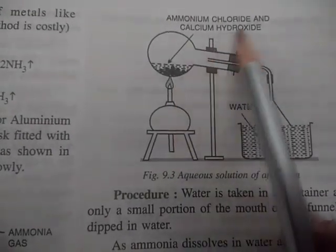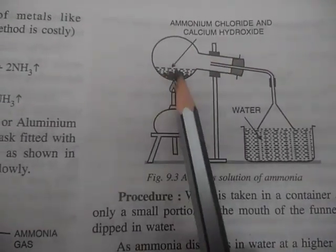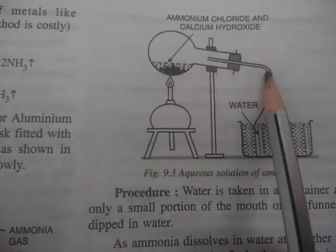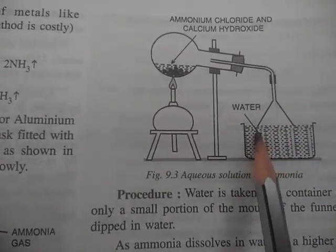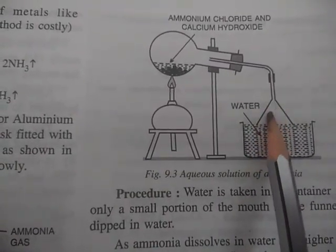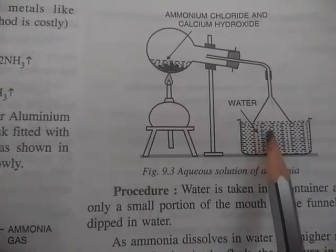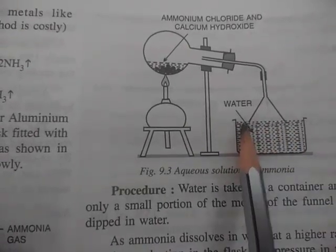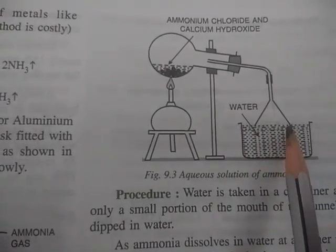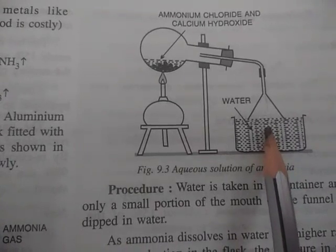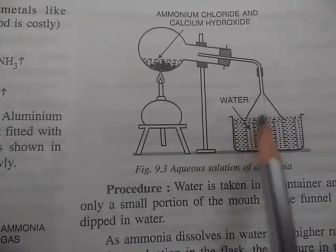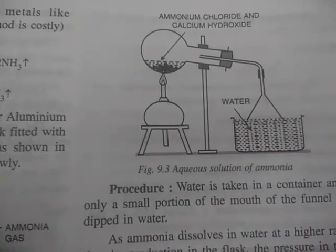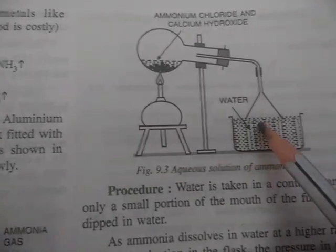On page 153, this is the same setup. Ammonium chloride and calcium hydroxide are heated here, NH3 will pass over here, and the inverted funnel is dipped just touching the surface only. You know the reason: to avoid back suction. This arrangement has been done to prevent back suction.